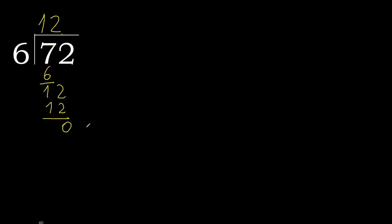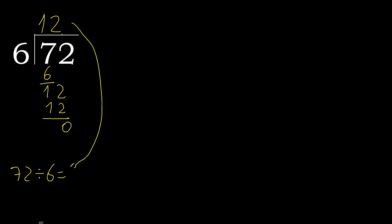There is no next number, therefore finished. 72 divided by 6 is 12.